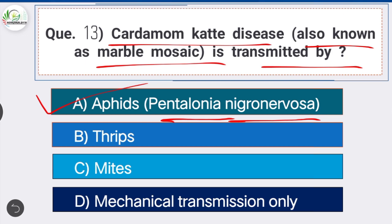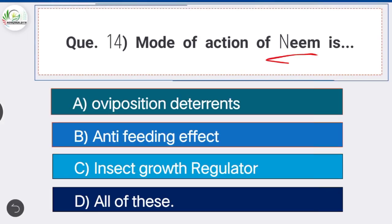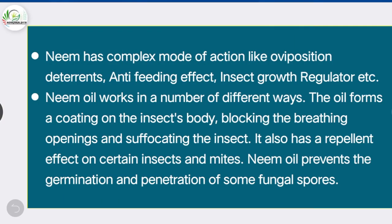Question 14: Mode of action of neem is Option D, the correct answer: all of these. Neem has a complex mode of action including oviposition deterrents, anti-feeding effect, and insect growth regulation. Neem oil forms a coating on the insect's body blocking breathing openings and suffocating the insect. It also has a repellent effect on certain insects and mites and prevents germination of some fungal spores.